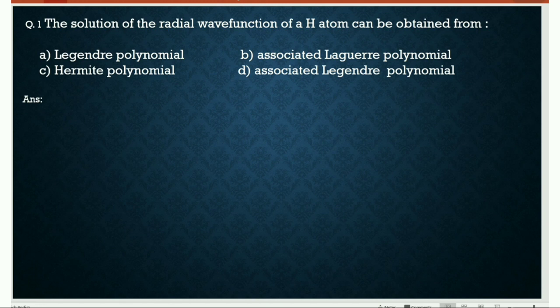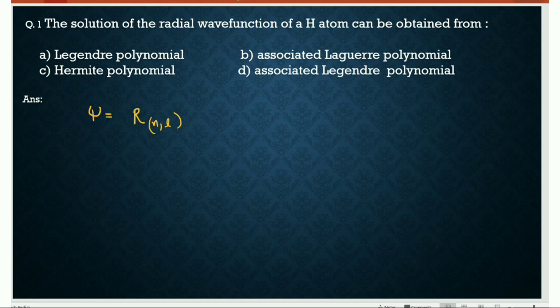The general wave function of a hydrogen atom is written as psi equal to R, where R is the radial wave function part, Rn,L — N and L are principal and azimuthal quantum number — then Y_L^M on theta phi function. This is the angular wave function and R is the radial wave function.